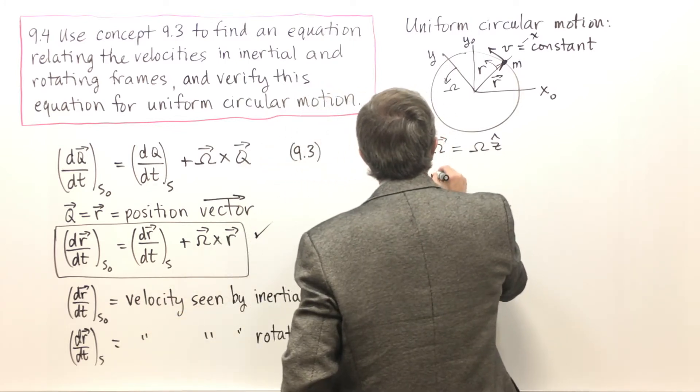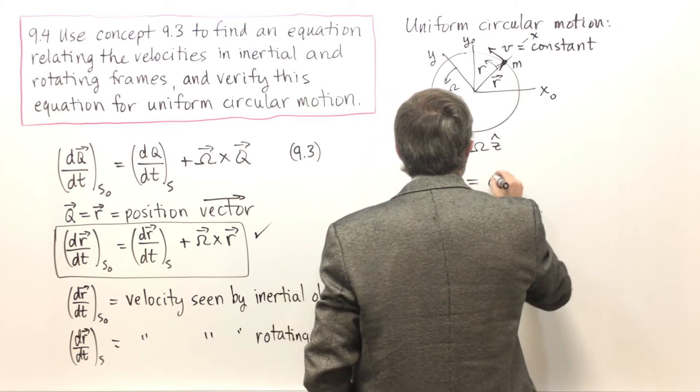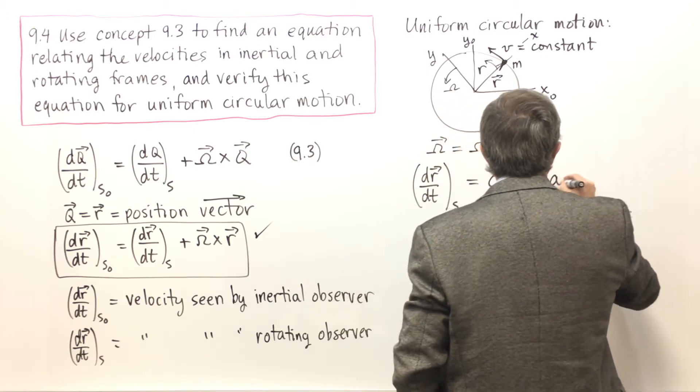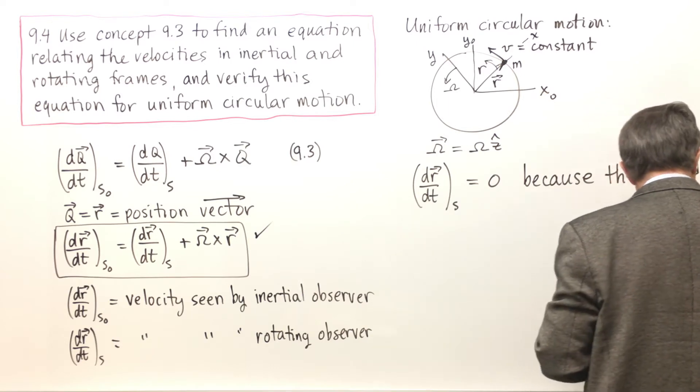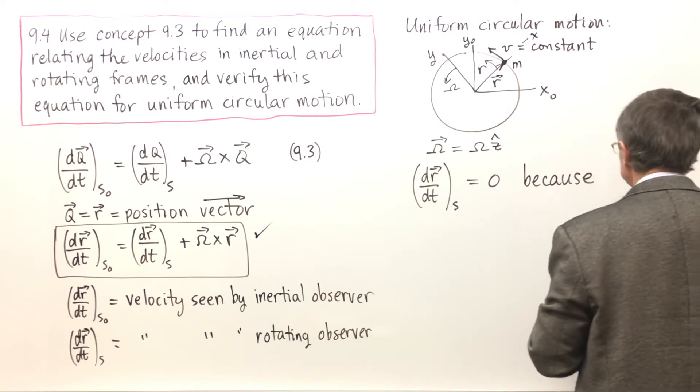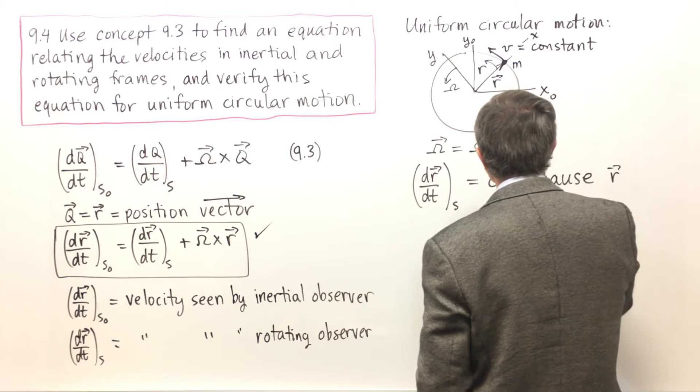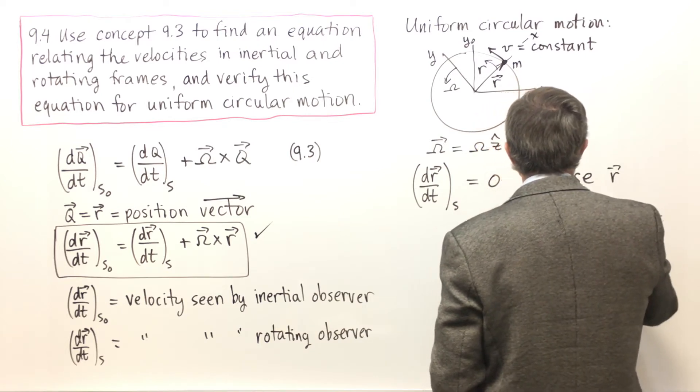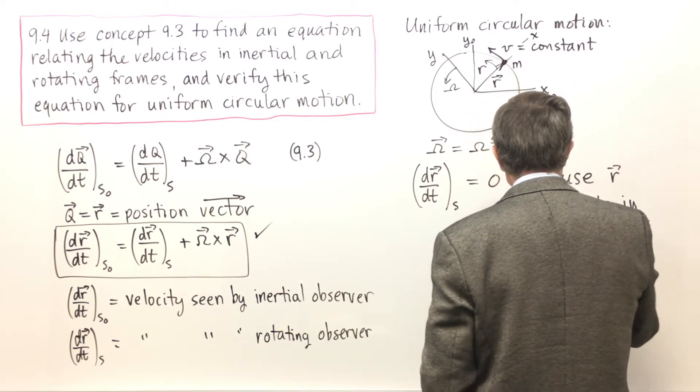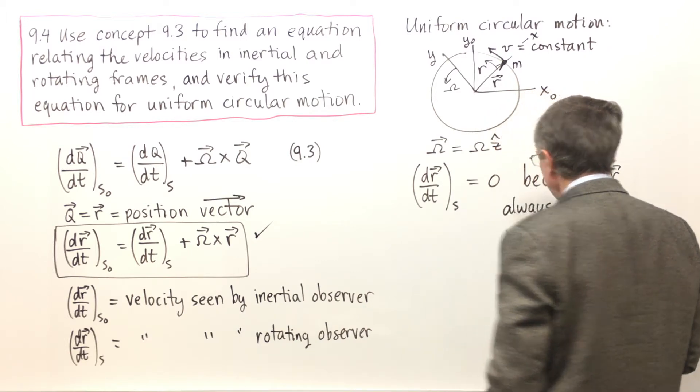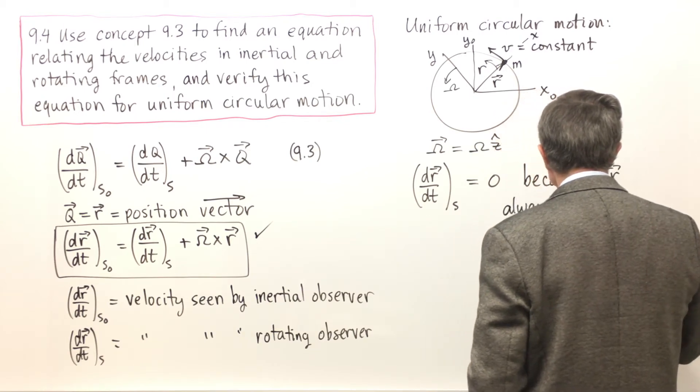So dR/dt in this example is 0 because the vector R is always pointing in the x direction.